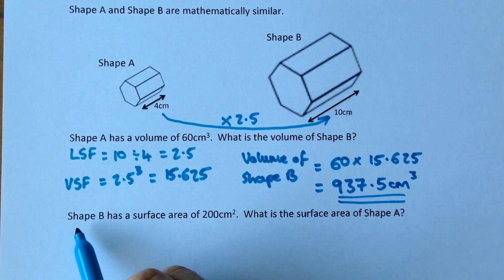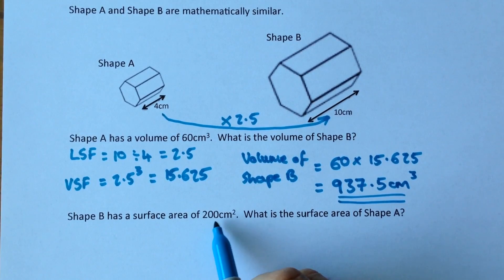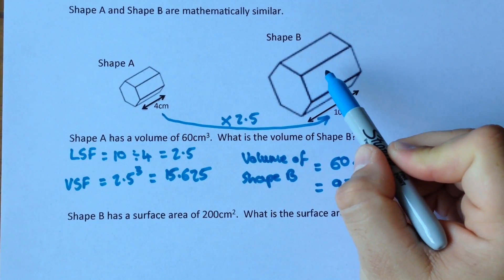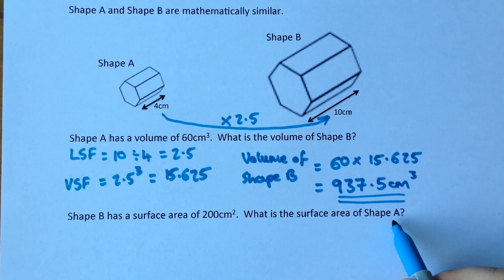Now the second part of the question says Shape B has a surface area of 200cm², so we've got some information about this shape this time. What is the surface area of Shape A?